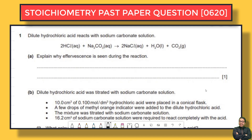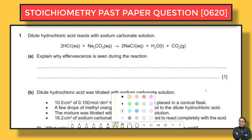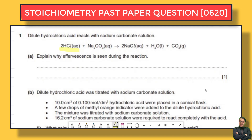The first question: diluted hydrochloric acid reacts with sodium carbonate solution. The first part asks us to explain why effervescence is seen during the reaction. Effervescence is seen during the reaction, which means that a gas is part of the products.